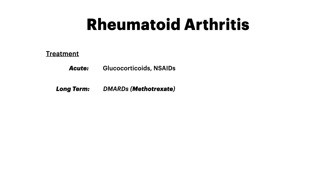Treatment for rheumatoid arthritis has two components: acute treatment for flares and long-term treatment. Long-term, patients receive DMARDs — disease-modifying anti-rheumatic drugs — with methotrexate being the key one to memorize. Acutely, glucocorticoids and NSAIDs are used during flares. To differentiate: OA, a problem of mechanical overuse and stress, is treated with NSAIDs. RA, with its autoimmune component, requires disease-modifying agents like methotrexate that target the immunologically-based inflammation.